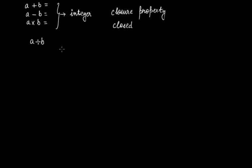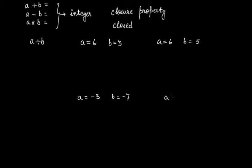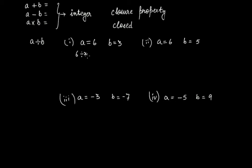Let's check. Say you have a as 6 and b as 3; a as 6 and b as 5; a as minus 3 and b as minus 7; and a as minus 5 and b as 9. Now solve them. For the first one, a divided by b gives 6 divided by 3, and you get 2, which is an integer.